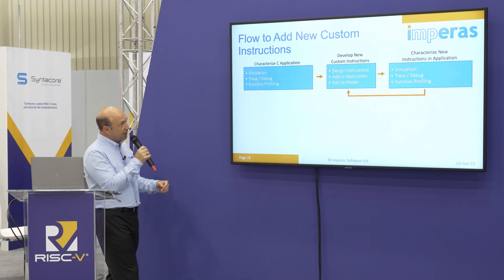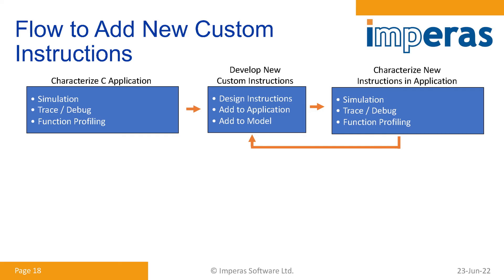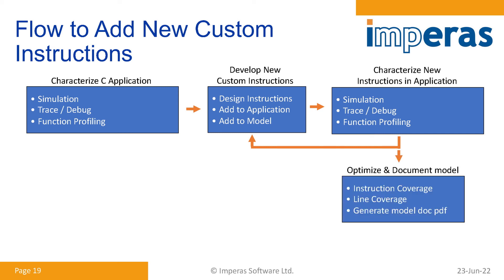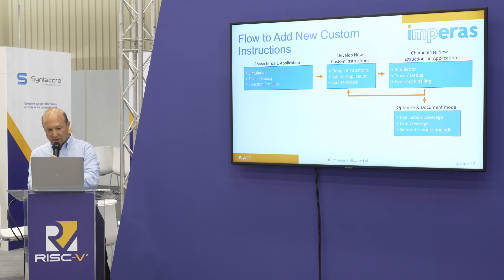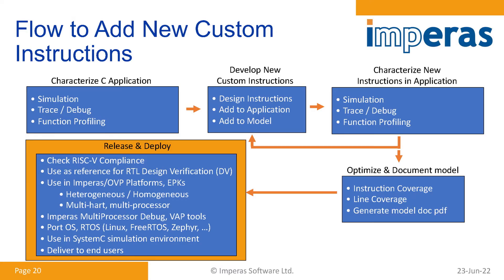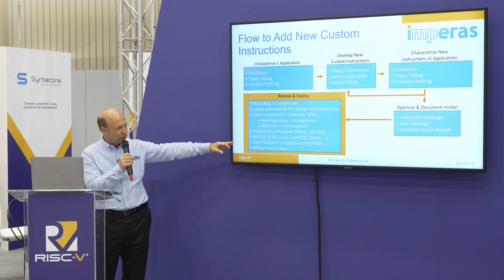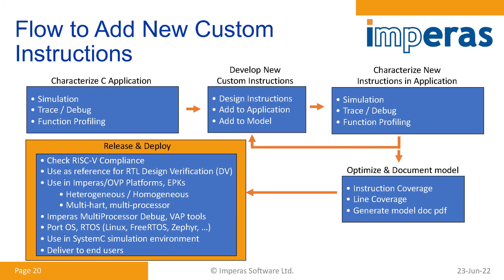We've taken this C application, characterized it, developed the new custom instructions, and characterized again. You would then iterate this process to optimize your custom instructions further. Following that, there's additional optimization and documentation. You'd want to do line coverage to verify the complete model, then deploy it. You can check your RISC-V compliance, use it as a reference for design verification, use it in virtual platforms for software development, perform debug and analysis, bring up your OS or real-time operating system, use it in a SystemC environment, or deliver it to end users.